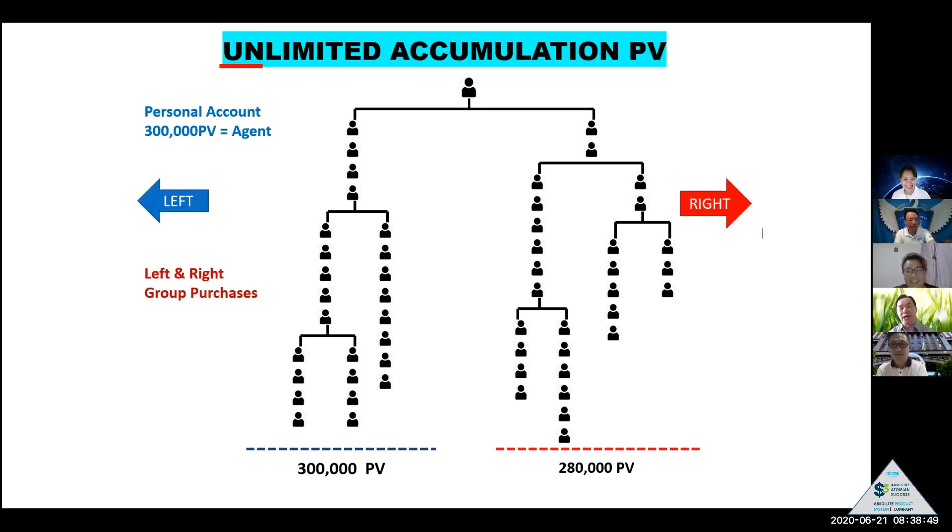So you are not qualified, but 300 - the left leg and right leg 300,000 - then you are qualified to get the commission. And no problem, this is the meaning.